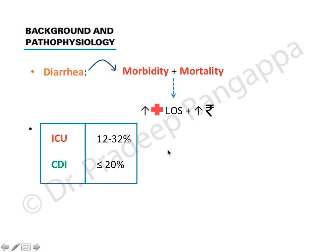We almost always attribute Clostridium difficile as the commonest cause of diarrhea in ICU, but Clostridium difficile infection, although it may occur commonly, accounts for less than 20 percent of diarrhea that develops in the ICU.